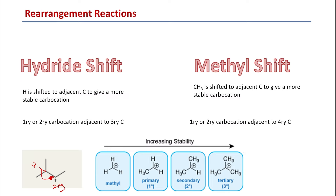We see methyl shift when we have a primary or secondary carbocation adjacent to a quaternary carbon. In this case, there is a secondary carbocation here, and we have a quaternary carbon adjacent to it, so the methyl can be shifted to generate the more stable carbocation.